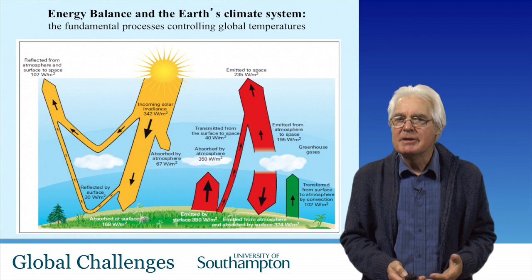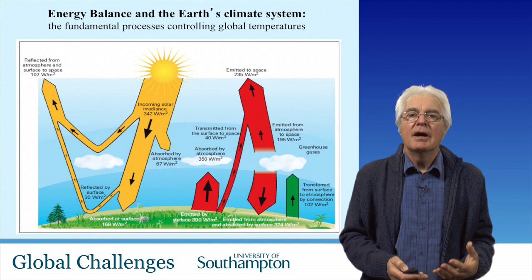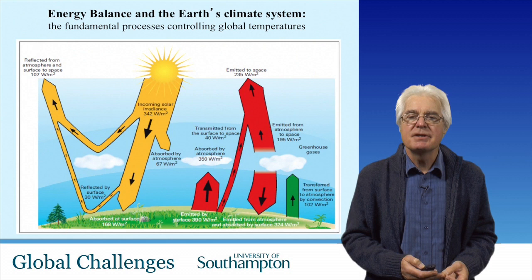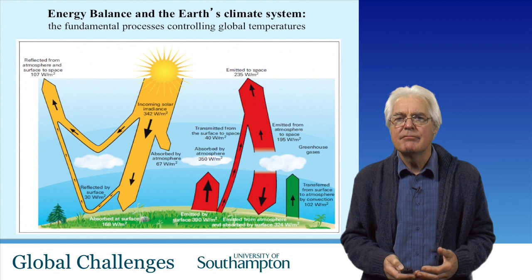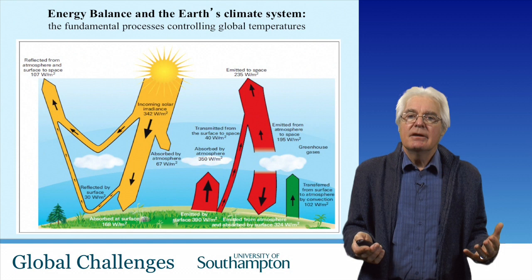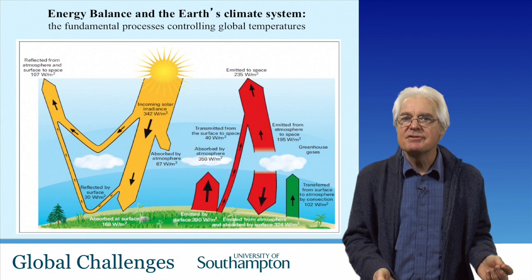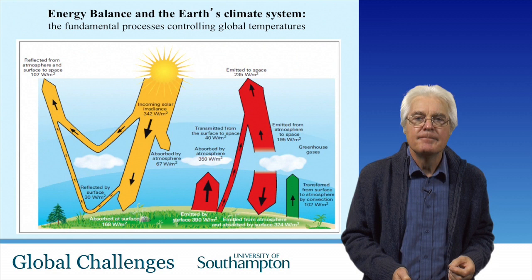This slide summarises most of what you need to know about the climate system. On the left hand side you can see incoming solar radiation — ultraviolet and visible light from the sun warming the earth. Some of it is reflected by clouds but most is absorbed by the atmosphere, the land surface and the oceans. On the right hand side you can see the outgoing infrared radiation from the warm earth. All warm bodies give off infrared radiation, and as the earth warms up it gives off more. If it's out of balance, it will continue to warm until it emits enough radiation to balance what is received. This is the energy balance of the climate system, the fundamental process controlling the planet's temperature.